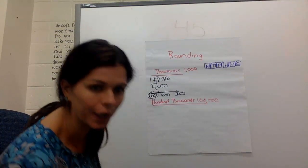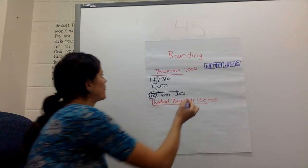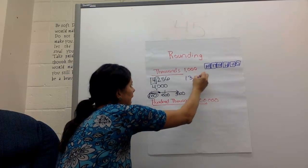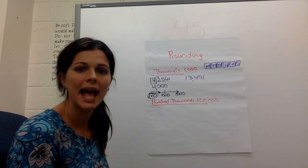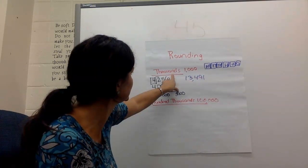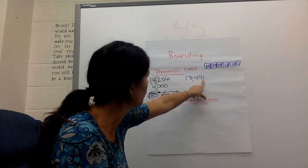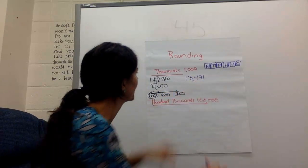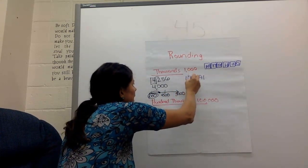Let's say I had the number 13,491. And they want us to round to the thousands. So ones, tens, hundreds, thousands. That fourth number. Draw a box around it.